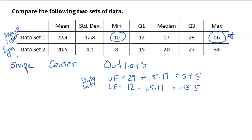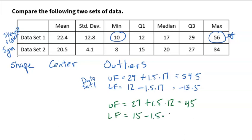For data set two, the IQR is 27 minus 15, which equals 12. The upper fence is 27 plus 1.5 times 12, which equals 45. Since the max is 34, which is not bigger than 45, there are no upper outliers. The lower fence is 15 minus 1.5 times 12, giving negative 3. With a minimum of 8, there's clearly nothing below negative 3, so there are no outliers in data set two. This is another difference: data set one has an outlier, which also contributes to it being skewed right.